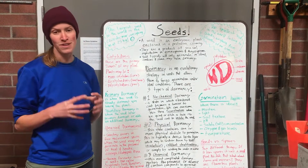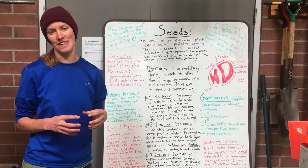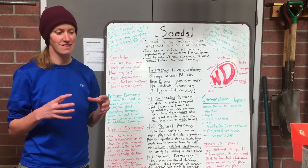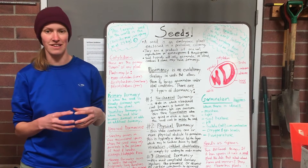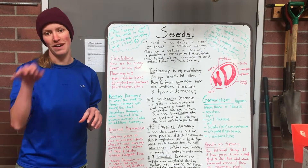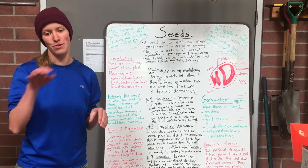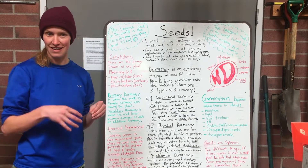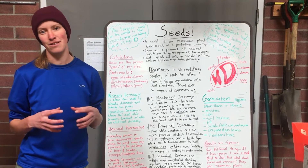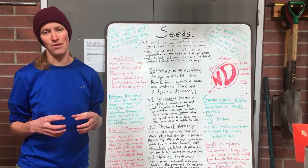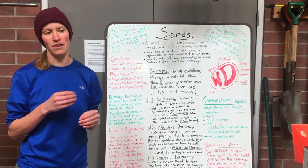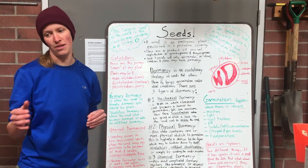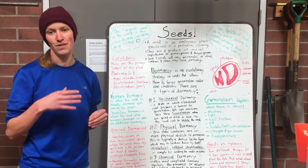Physical dormancy is another type of dormancy. In this case the seed is enclosed by a layer of protective material inside the seed, and this has to be broken down either by a long period of chilling or a long period of heating.